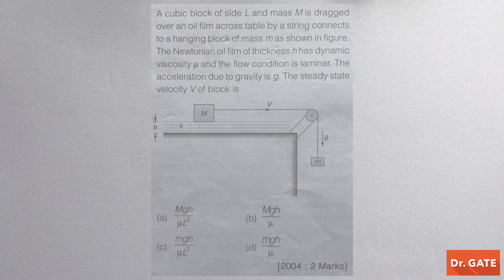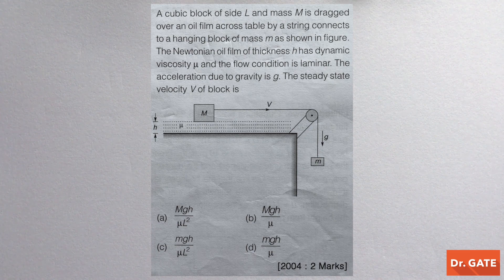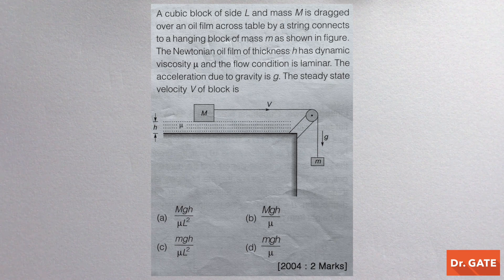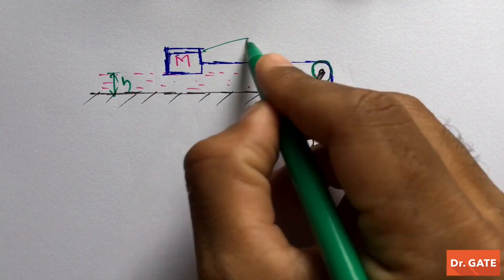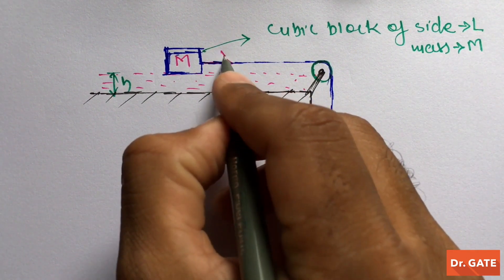Let's solve one more question. A cubic block of side L and mass M is dragged over an oil film across a table by a string connected to a hanging block of mass m. The Newtonian oil film of thickness h has dynamic viscosity mu and flow is laminar. The acceleration due to gravity is g. We have to find the steady-state velocity of the block.